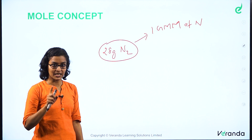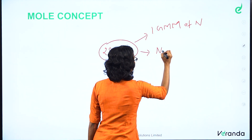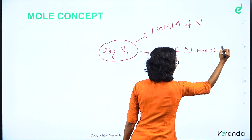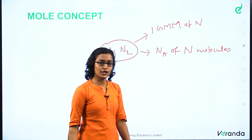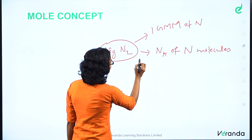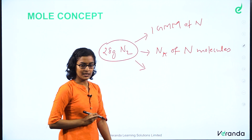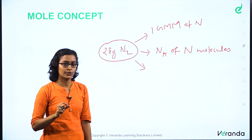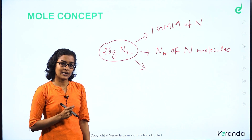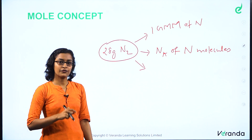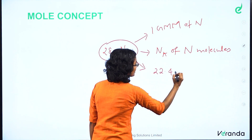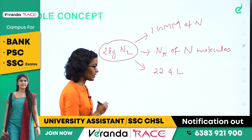Then, 28 grams of nitrogen means Avogadro's number of nitrogen molecules. That means 28 grams of nitrogen is 1 gram molecular mass of nitrogen.